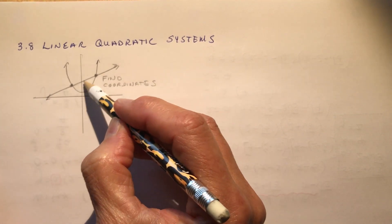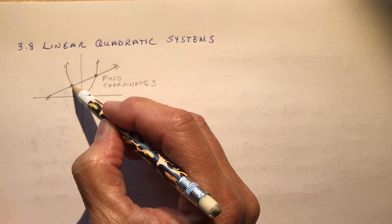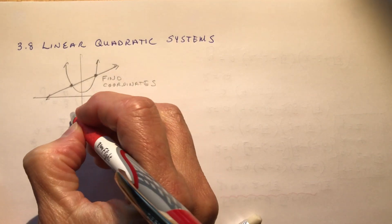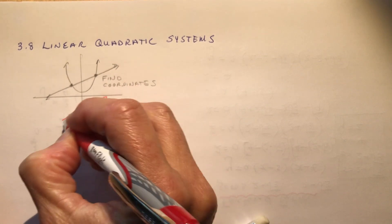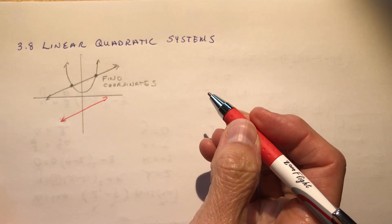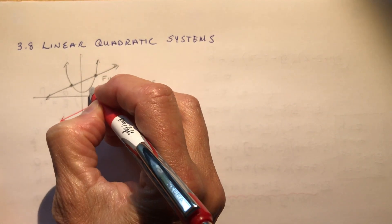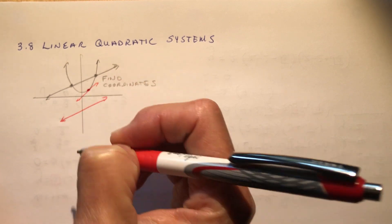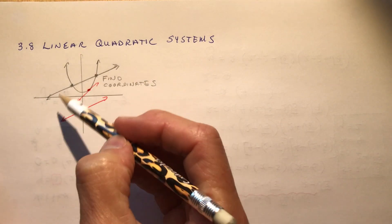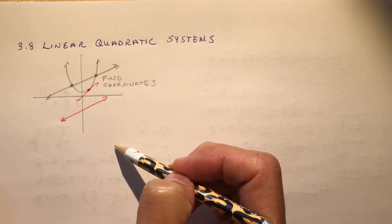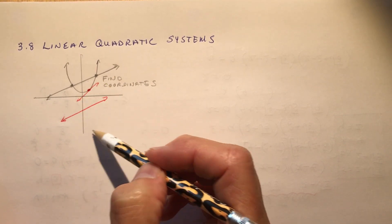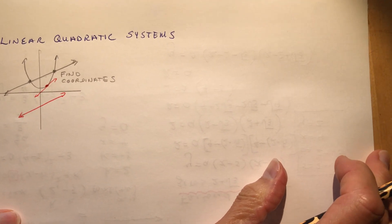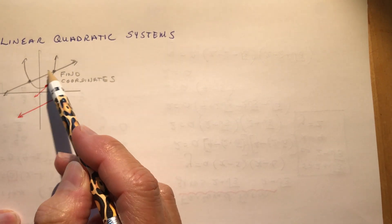Now you can see that you could have a system where you have two solutions or I could do something like maybe my line was here and it never crossed. So I might have no solution or of course there's always the possibility of this line just passing through one point. So again you can have three types of solutions and the question is, is there a way to determine how many solutions you have? And the answer is yes and I'm going to get to that in a few minutes. So let's talk about how would we solve for these two points.